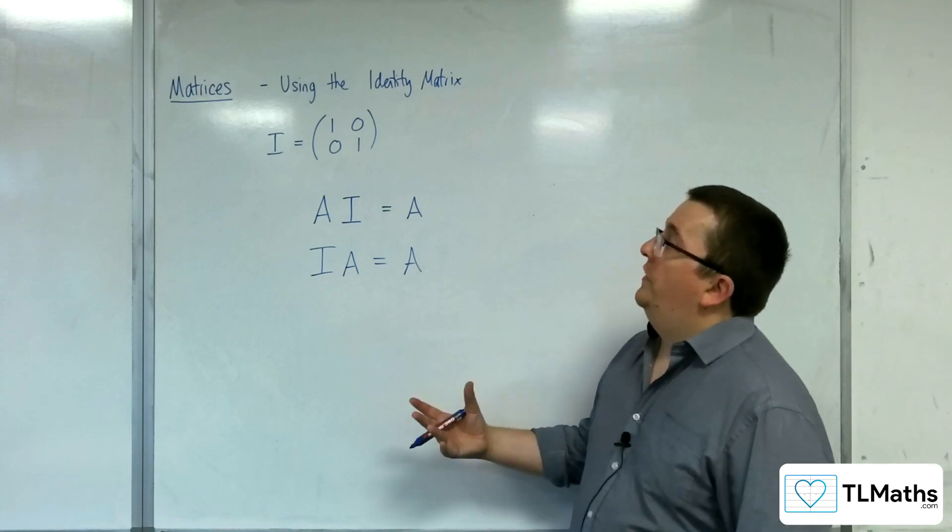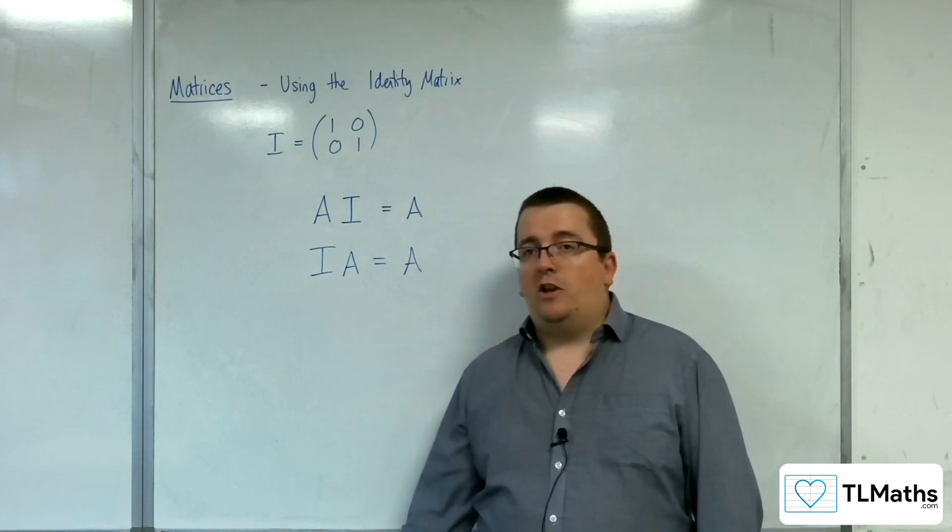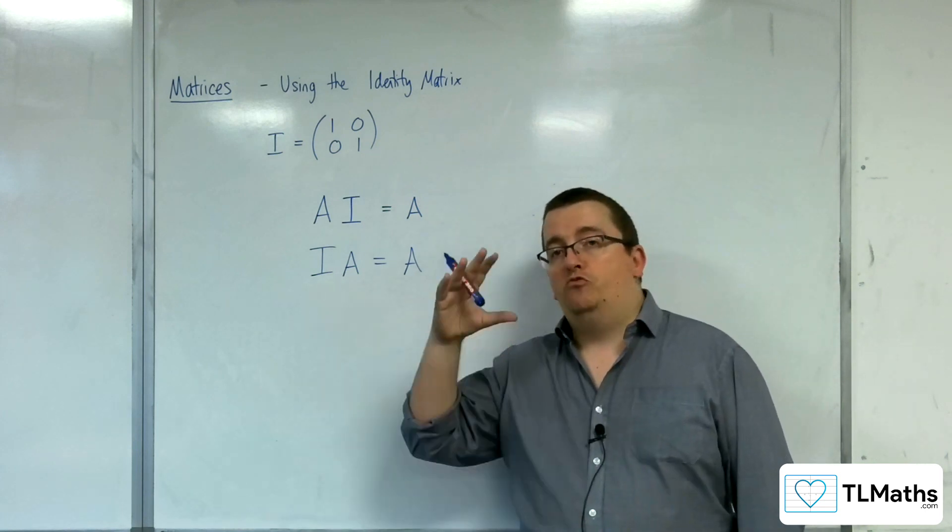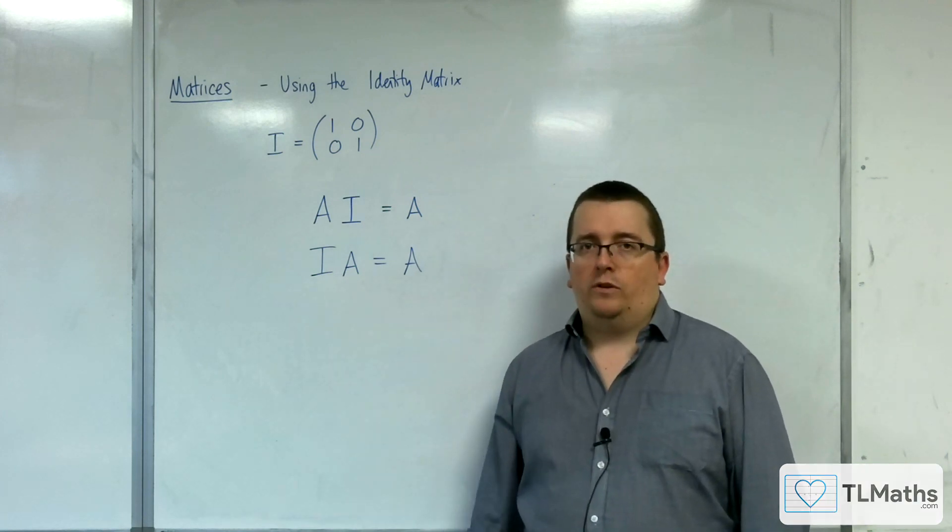So that is one thing you need to be aware of: the identity matrix. And we use I as the notation; it is the understood notation to represent the identity matrix.